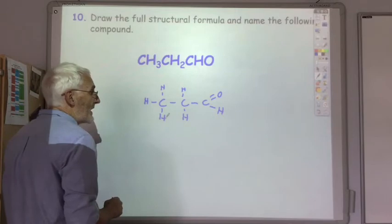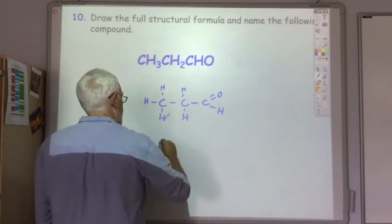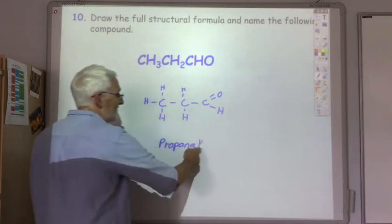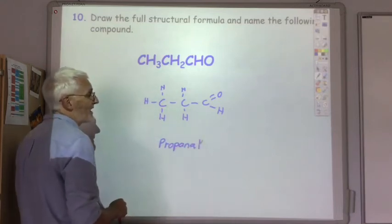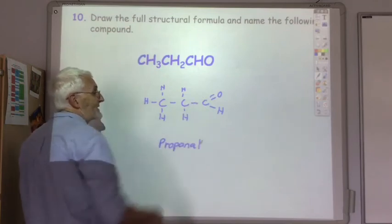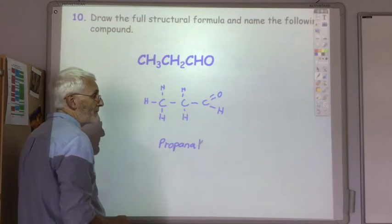So we've got an aldehyde here, three carbons, so we've got propanal. You don't need to say where the carbonyl group is because, being an aldehyde, you always get the C double bond O on the first carbon.